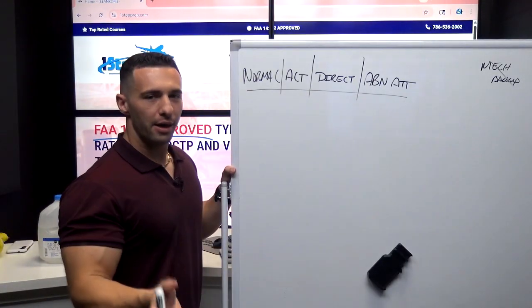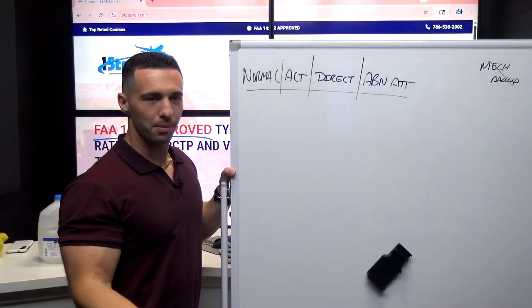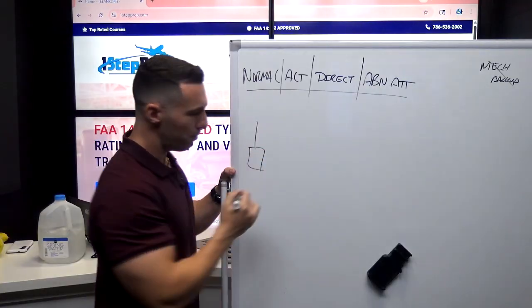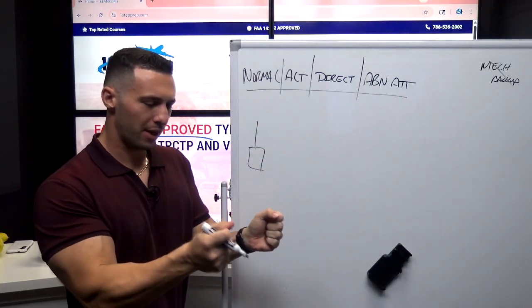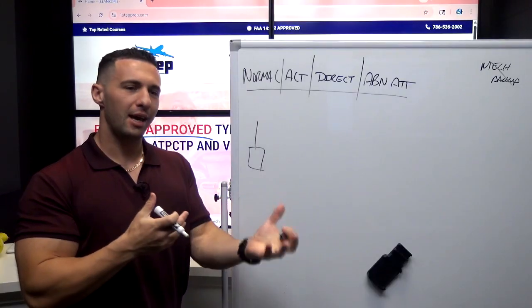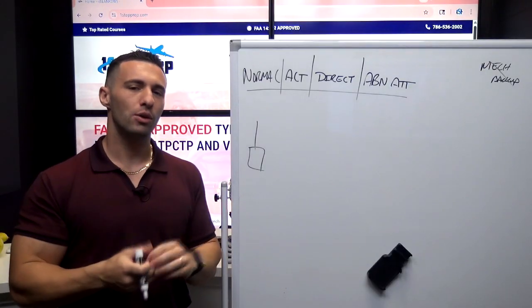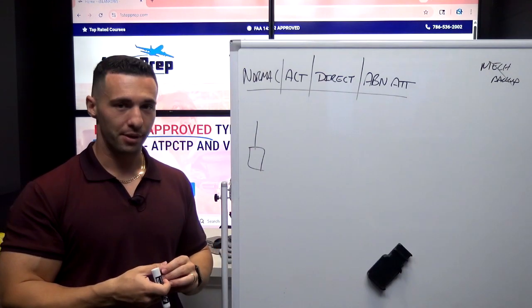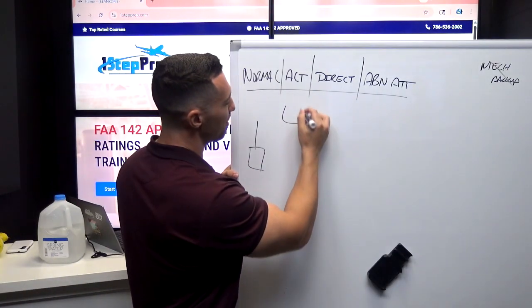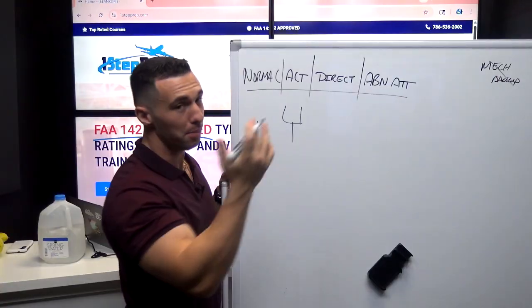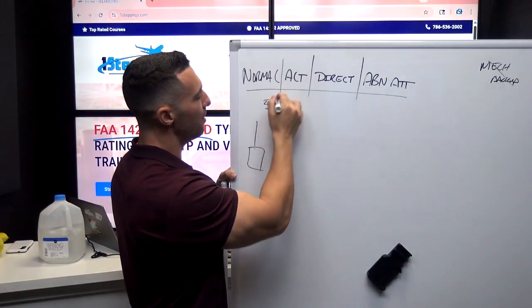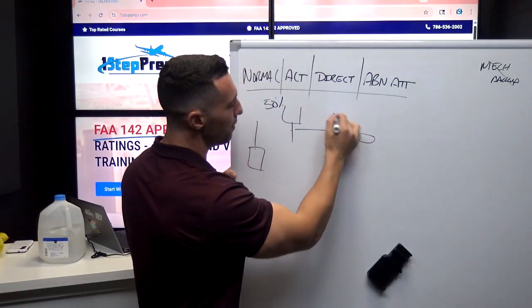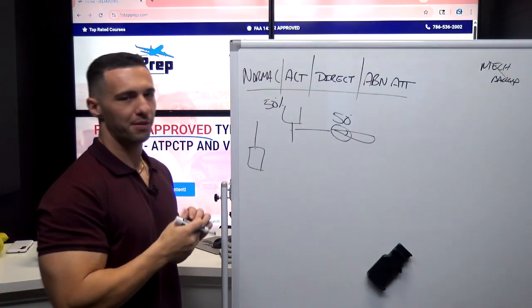For any of you that have flown anything other than an Airbus, which is all of you, because at some point I'm sure you flew a 172 or a Piper Warrior or something to that effect, you're probably well aware of the fact that when you grab that control column or that yoke and you pull aft on it, there's probably a cable or a pulley system that's moving the elevator or the aileron or the rudder proportionate to your rudder or your elevator or aileron input. And so just to give you some paralleling to this, like even in the Boeing for example, if I move the column 50 percent deflection aft elevator input, effectively now my elevator is going to move proportionate to the deflection of the control column, which is 50 percent.